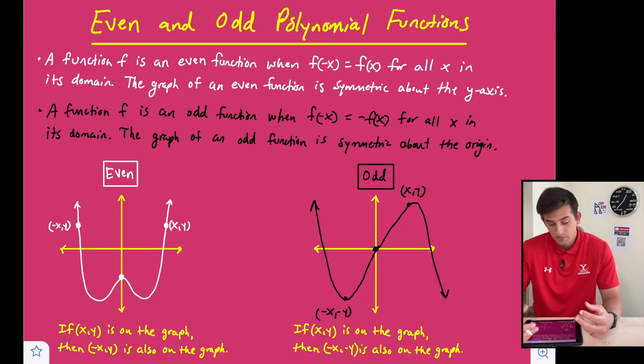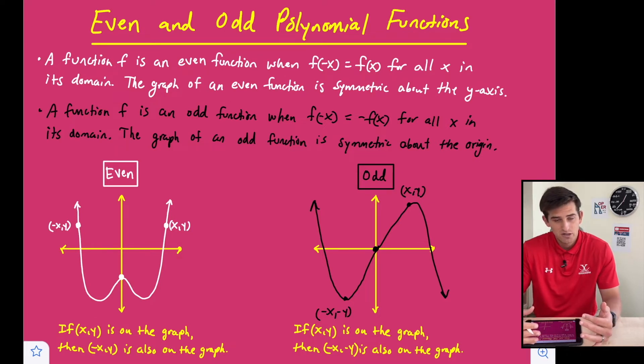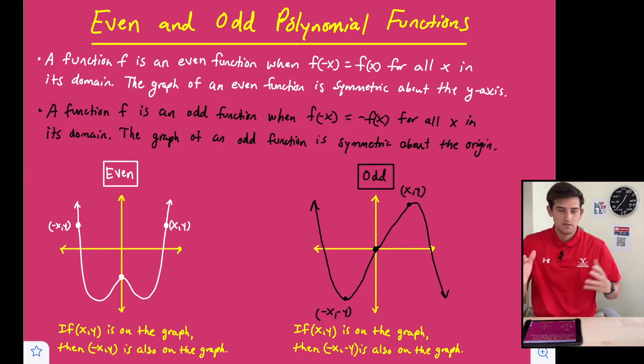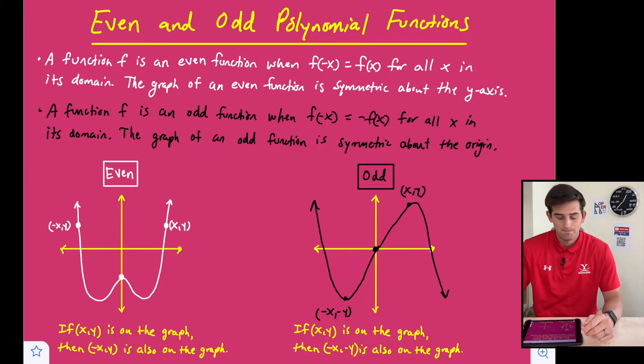The other way is if we can graph it and the graph is symmetric about the y-axis — like if we folded it over the y-axis, it would map on top of itself — then it's also an even function.